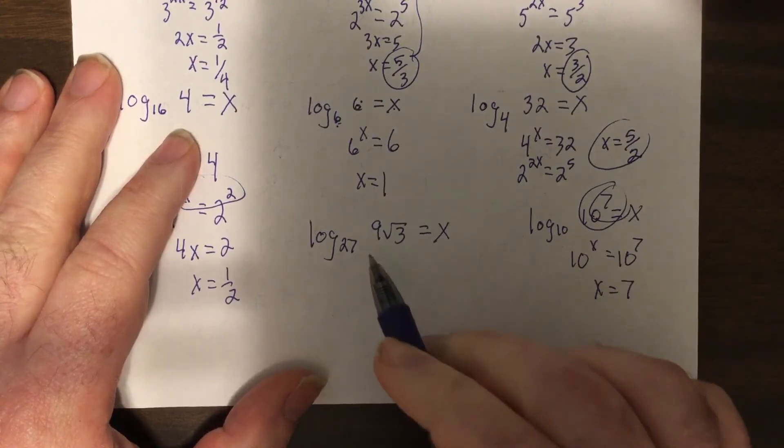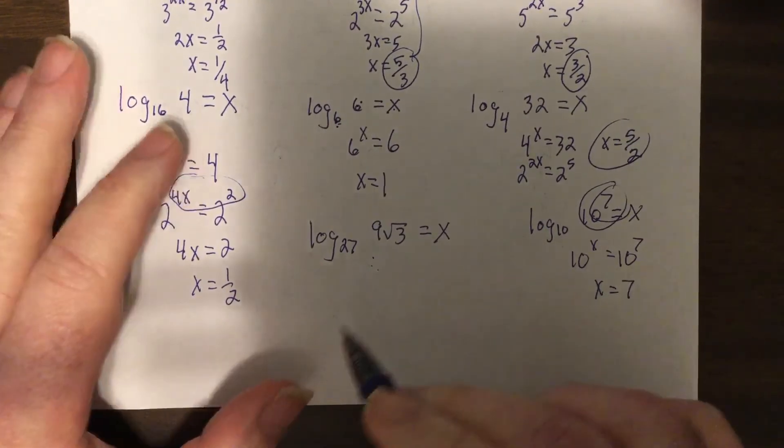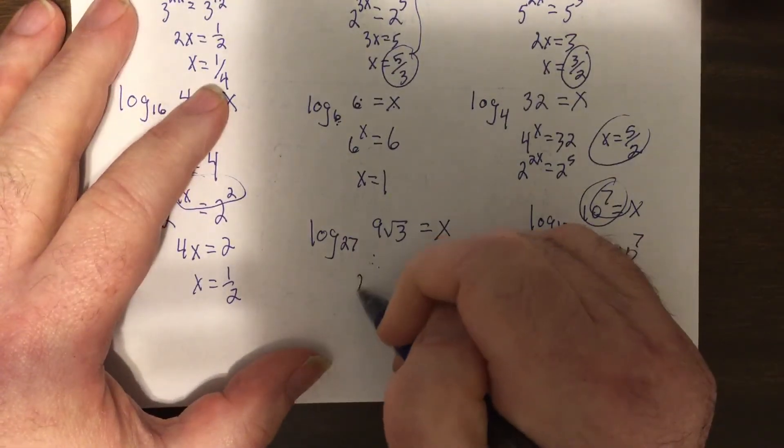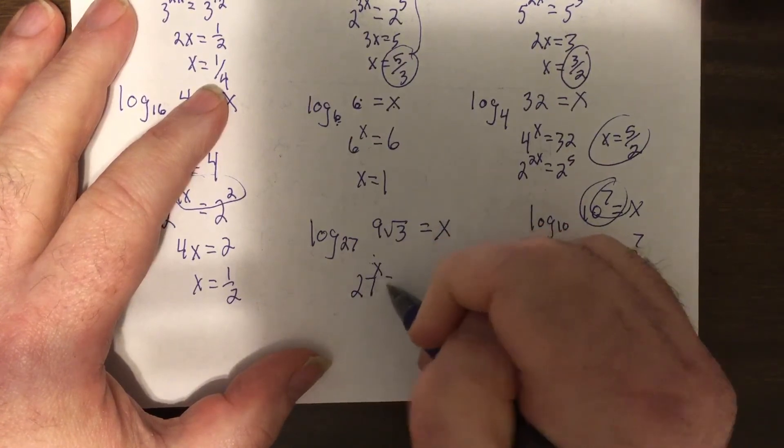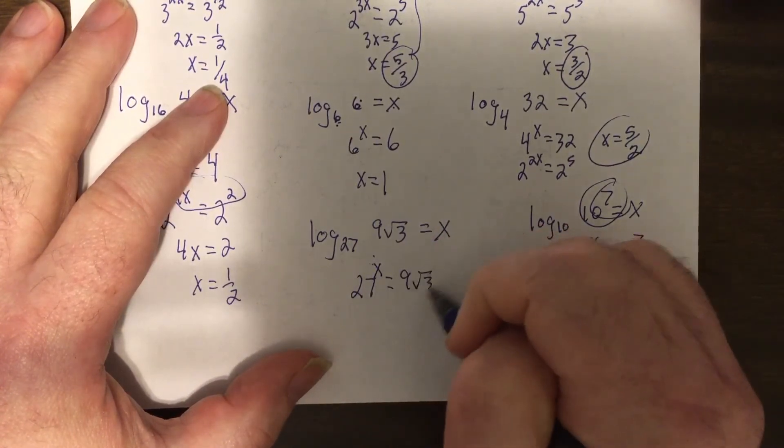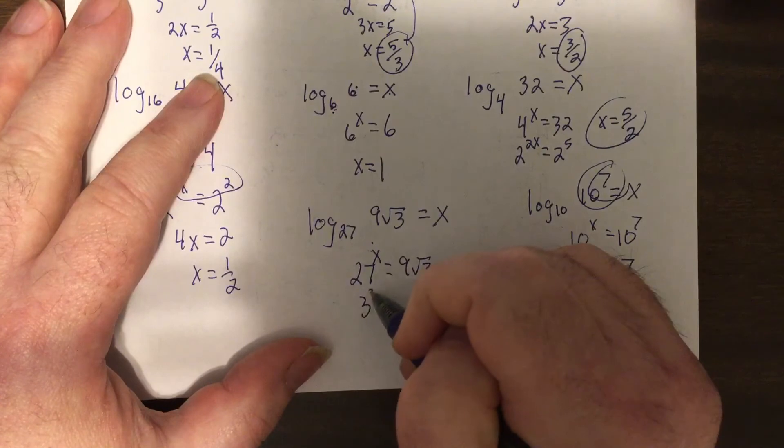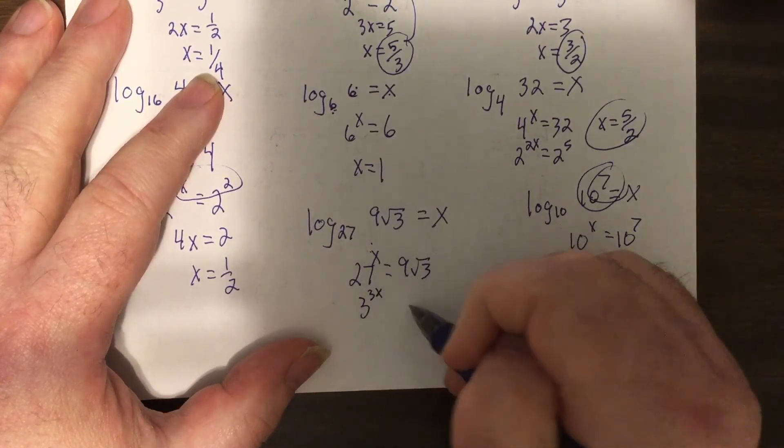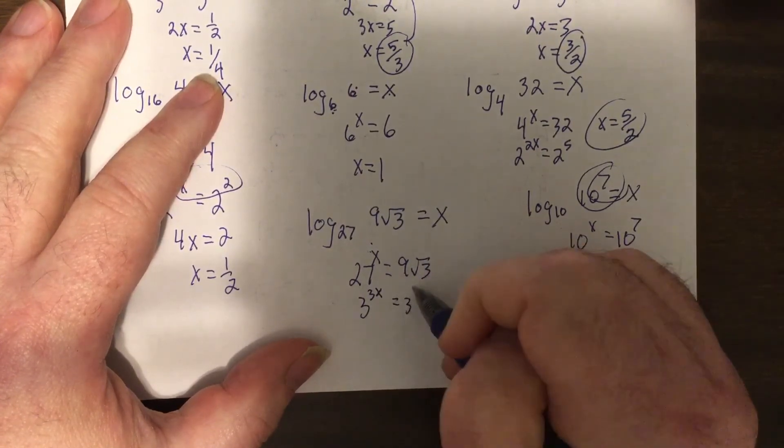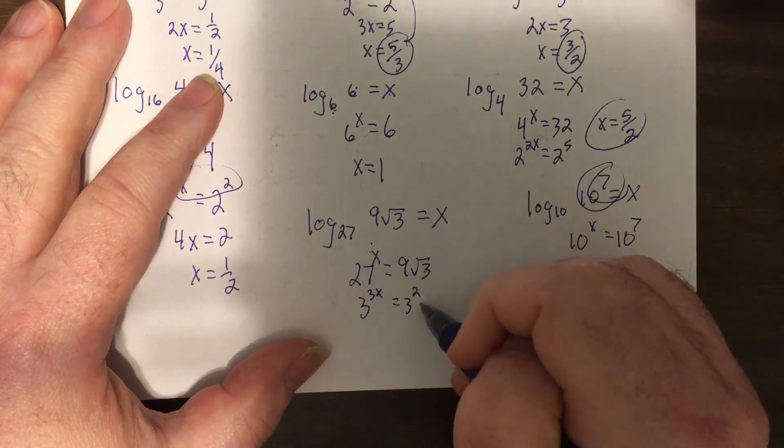Now that's a tricky one, most people get this wrong no matter how many times I show you how to do it. So it'd be 27 to the x equals 9 square root of 3, so 27 is 3 to the 3x. So 9 is 3 squared and square root of 3 is 3 to the half. When you multiply two things same base you add the powers, so it'd be 2 is 4 over 2.